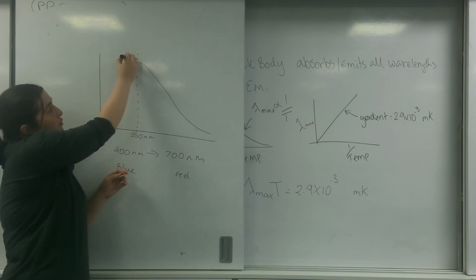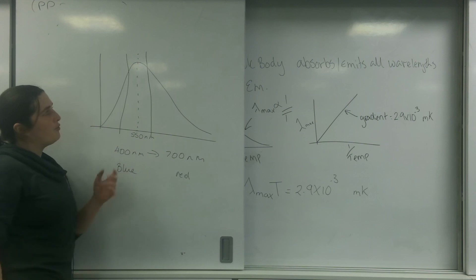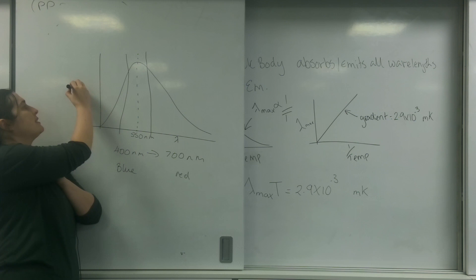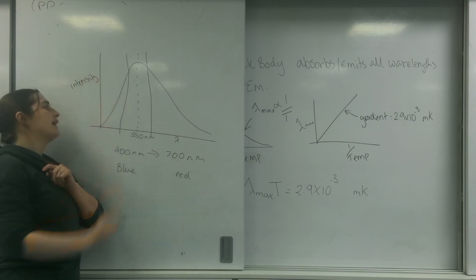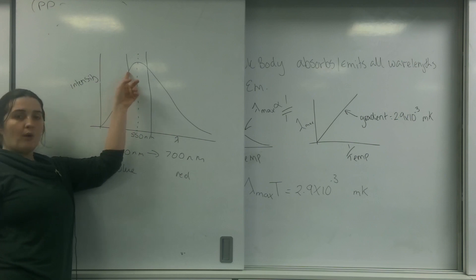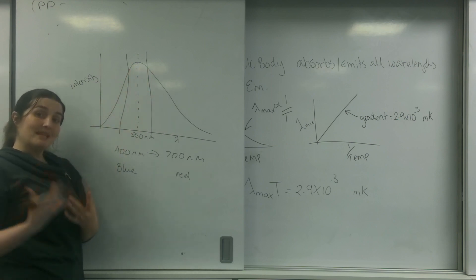And if I was to draw the outer limits of my visual spectrum here, so remember this is wavelength and this is intensity, I still have quite a lot of blue and quite a lot of red also being emitted. And this is the thing.